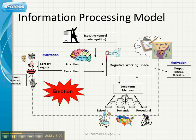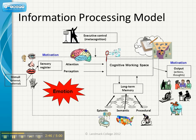Once information makes it into long-term memory, you've acquired that knowledge. Some problems can happen after that point, but at least you've made it into your long-term memory. To actually produce an output to prove that you have this knowledge, the information has to go back to the cognitive working space, get worked on, and then be output in some form. And again, executive functions are critical here, including motivation and so on. So this is a quick overview of what we covered on Saturday, and I want you to keep this in mind as we move through the rest of this section.